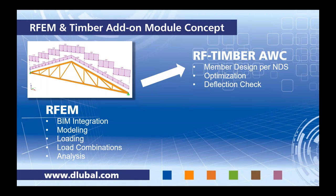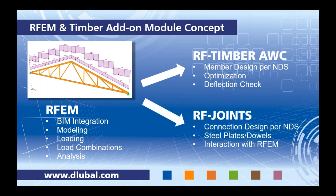We can also optimize members based on a specific ratio check — for example a design ratio of 0.8 or 0.9. We can also do a serviceability check for limiting deflection ratios. The other add-on module, RF Joints, now has NDS 2015 support for ASD and LRFD timber connection design utilizing steel plates and dowels. I'll show you how the add-on module interacts with RFEM regarding actual stiffness properties of a connection and how that affects internal forces.